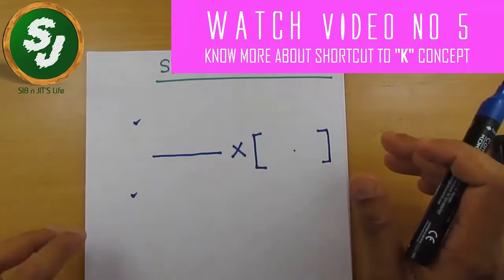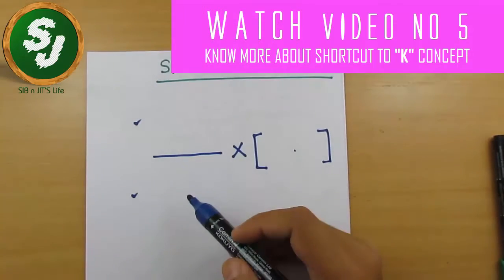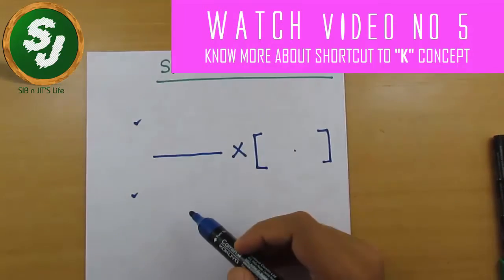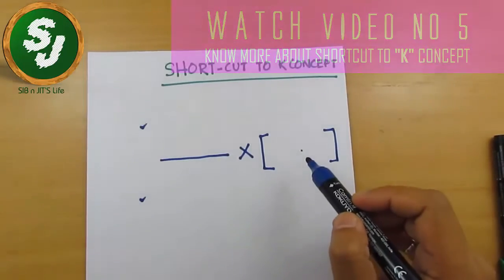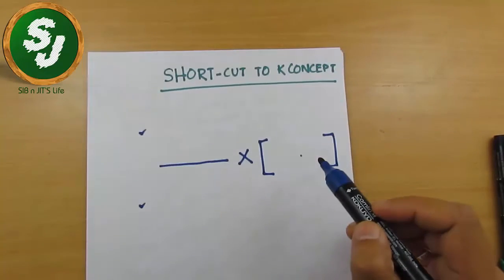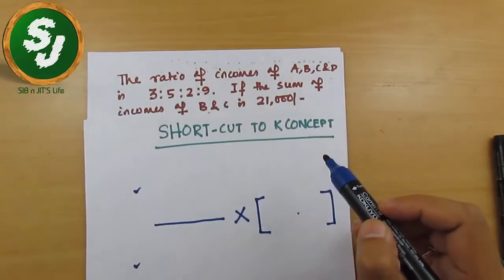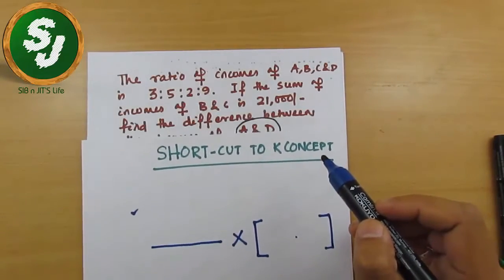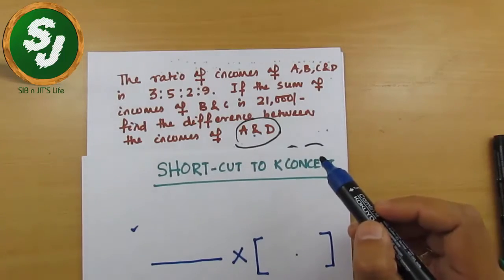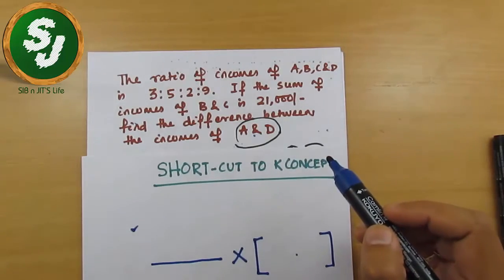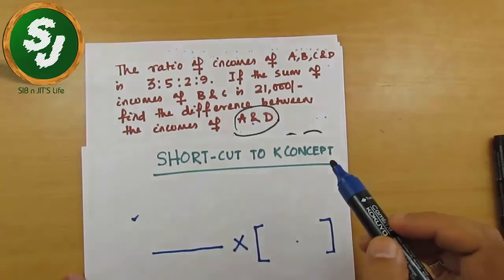If you calculate this, your answer will come. What should be written in the numerator part, what should be written in the denominator part, and what is this number — we will talk about this using the examples we solved in the last video.